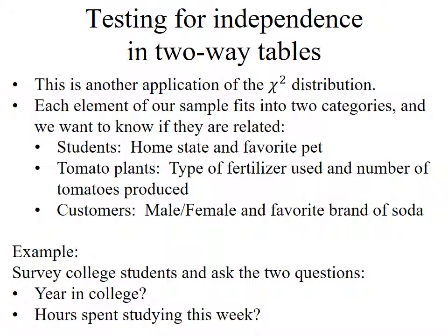We're going to learn how to study whether two different variables are related to each other using the chi-squared distribution and two-way tables. Here's the scenario: we're going to gather data where the data fits into categories, except now each element of our sample fits into two different categories, and we want to know if they're related.